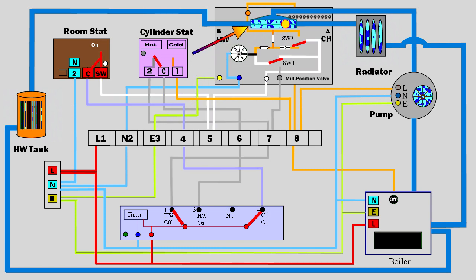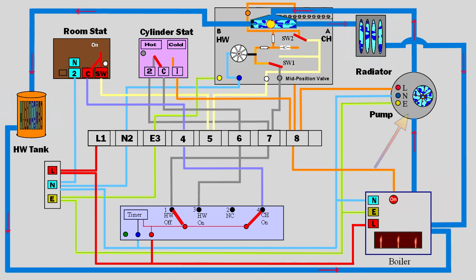The motor moves the valve to block the hot water exit. At the mid valve position, SW1 always changes over just ahead of SW2. SW2 starts the circulation pump and boiler.